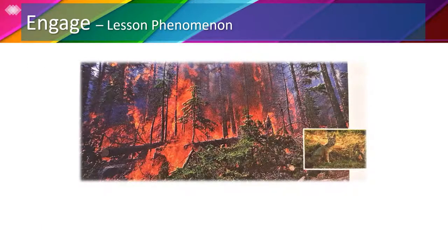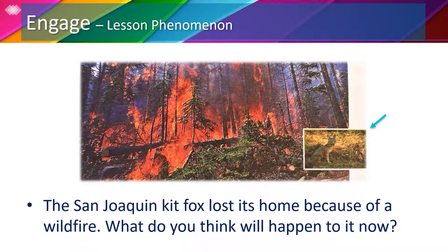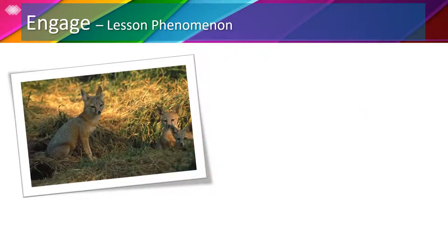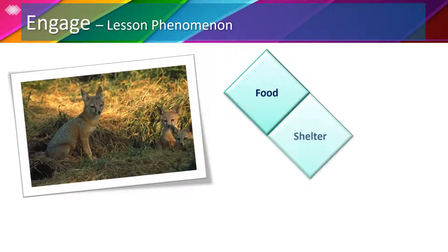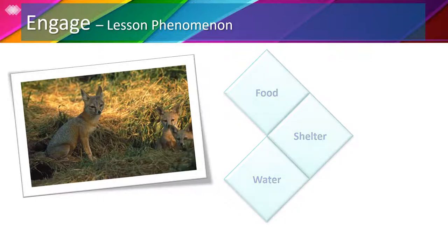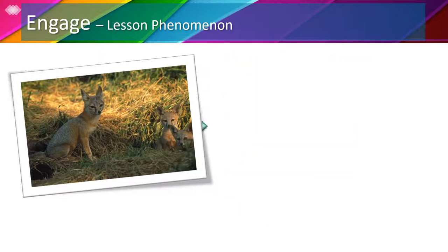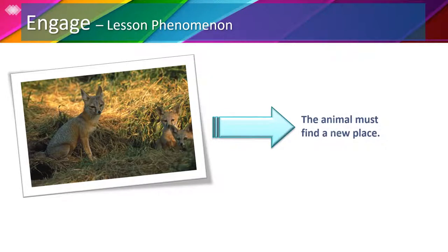If we look at the picture in our book, page 321, we can easily tell that there's a wildfire, and if you notice on the bottom right, there's a picture of a fox — a San Joaquin Kitt Fox who used to live in this forest, but now the forest is on fire. What do you think will happen now that the fox lost its home? We know that animals like this fox get food, shelter, and water from its environment — they need these things to survive. If these needs aren't met, the Kitt Fox will die. Therefore, the animal must find a new place that provides it with the things it needs to survive.